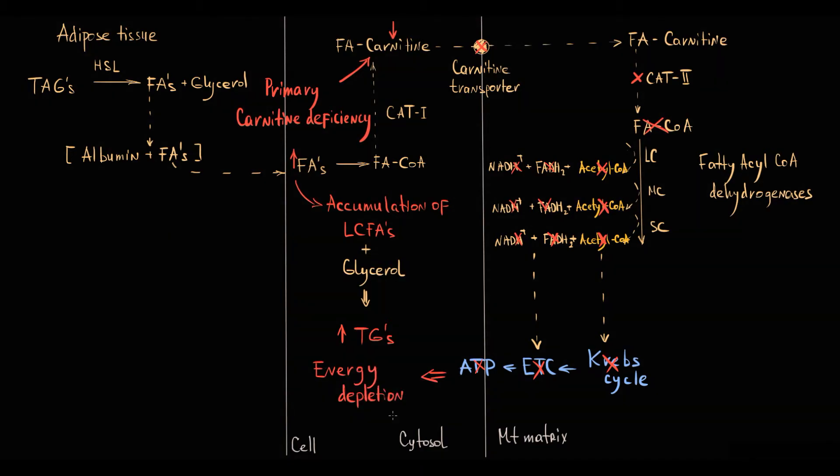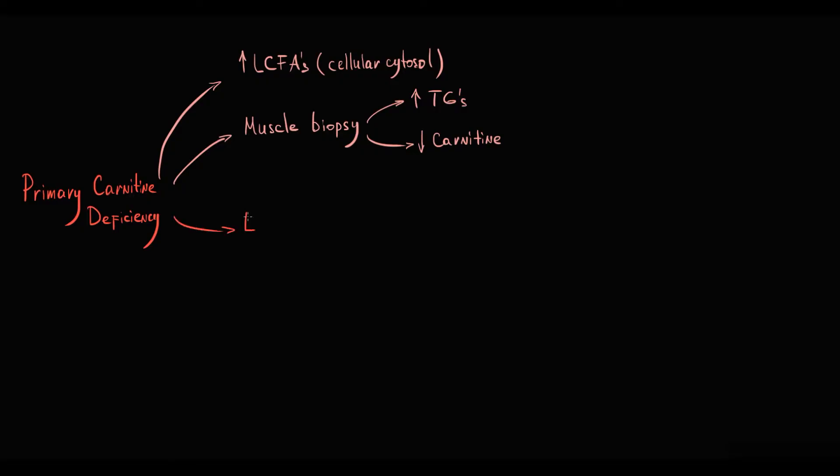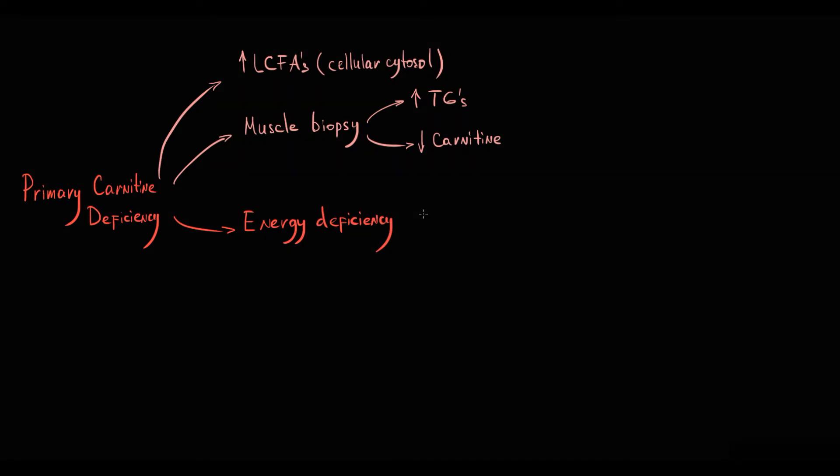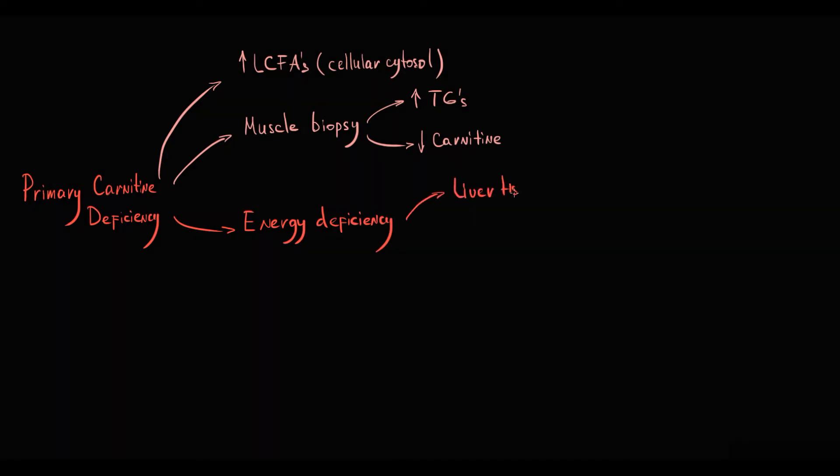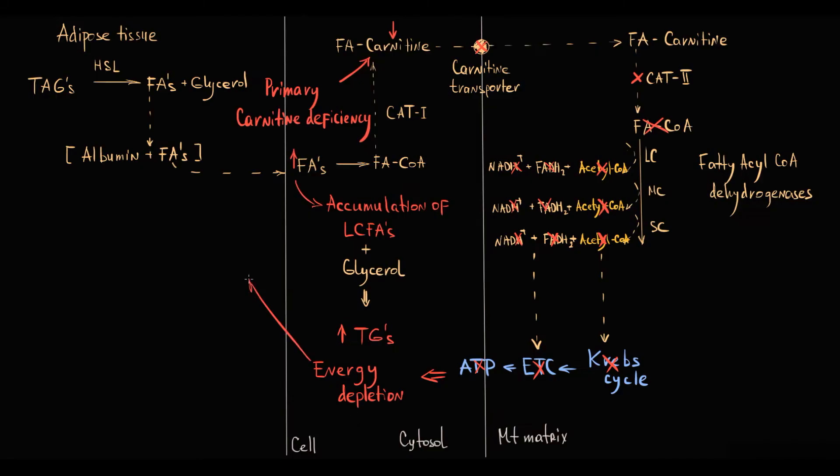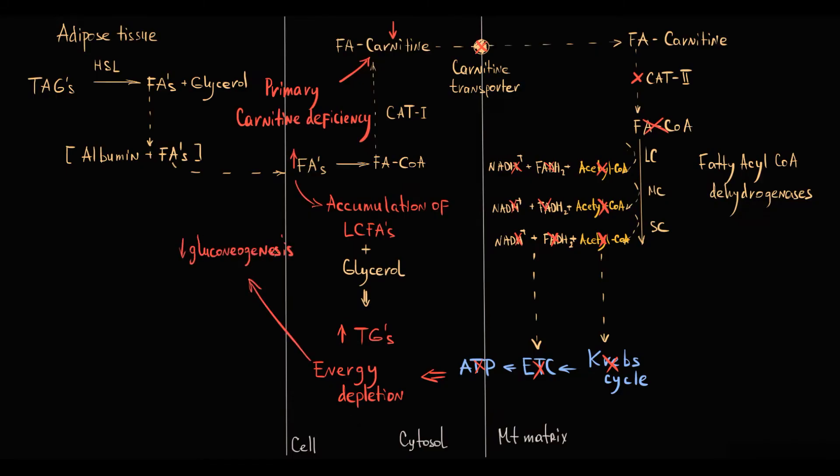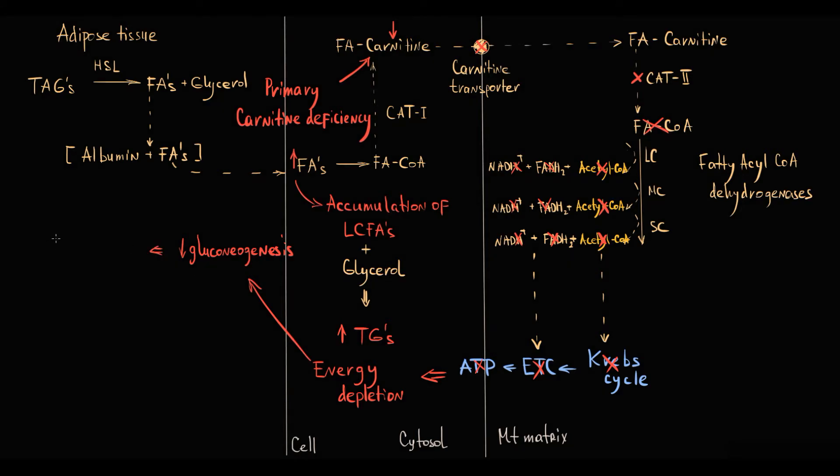Tissues are in severe energy depletion state, and the most sensitive to severe energy deficiency are muscle tissue and liver tissue. Liver tissue without sufficient amount of ATP molecules cannot produce glucose, so energy deficiency disrupts gluconeogenesis, and this results in severe hypoglycemia.